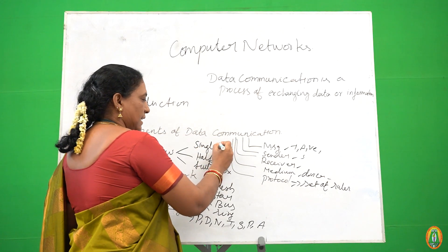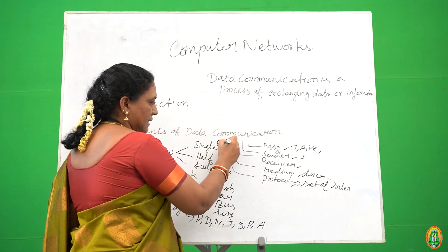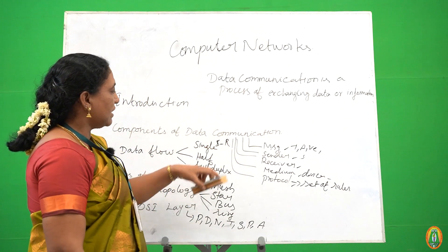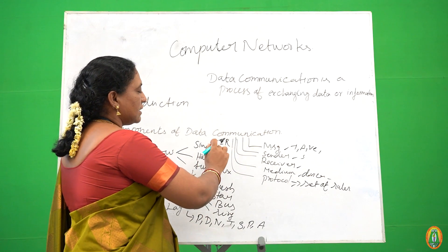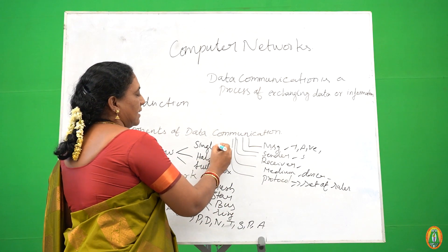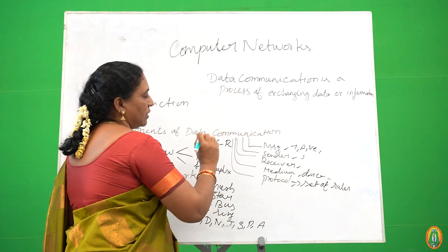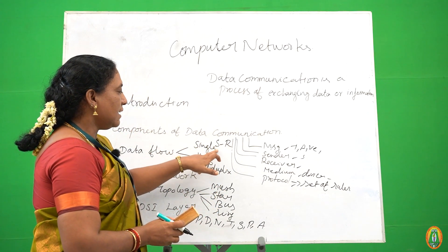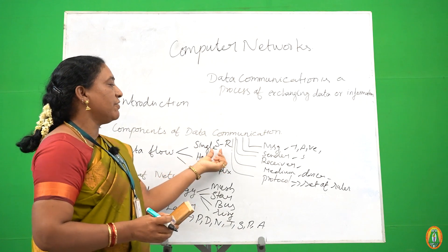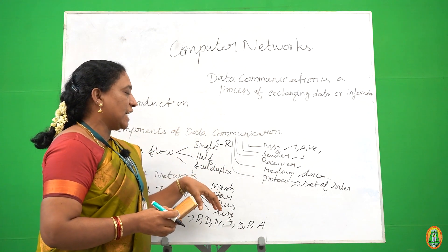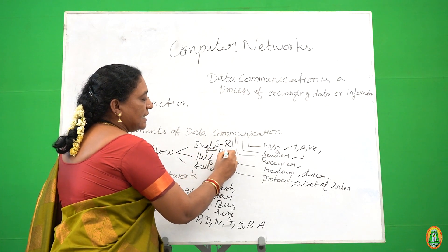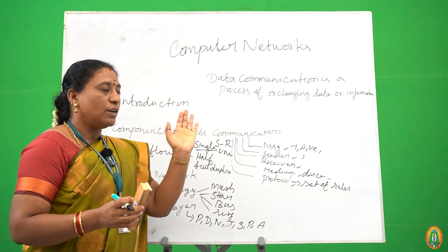Simplex means we have a sender and a receiver. Sender always sends the message; receiver always sends the request. The sender accepts the request and sends the message to the receiver. Simplex is unidirectional, meaning one-way directional.